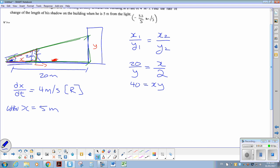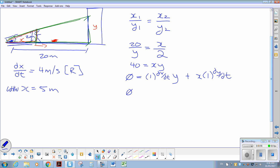I'm going to take the derivative of this. The derivative of 40 is 0. Derivative of x is 1. So, 1 times dx/dt times y - I'm using product rule - plus x times dy/dt. Simplifying: 0 equals y dx/dt plus x dy/dt.